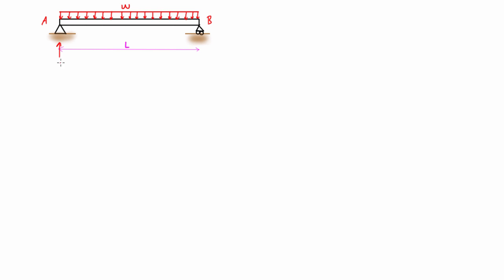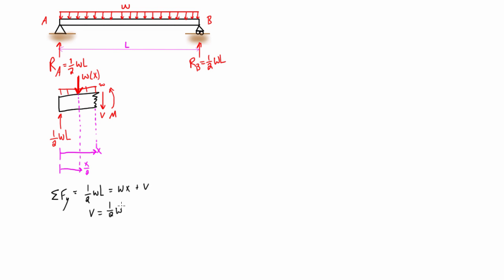The way that we solve this is we would do some very elementary statics to draw the free body diagram. We can just draw it right on the drawing here where we'll find that our A is going to be equal to 1 half WL and then our B would also be equal to 1 half WL. Just W times L. We're splitting that up because of the symmetry.